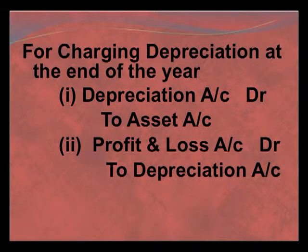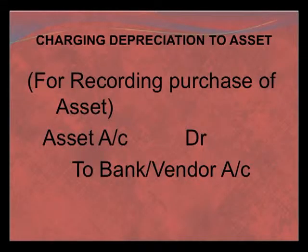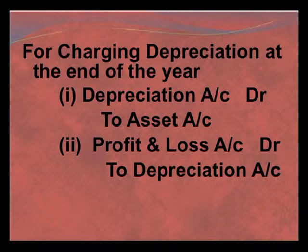To charge depreciation at the end of the year under this method, we first debit the depreciation account and credit the asset account. For transferring the depreciation to profit and loss at year end, we pass the entry: profit and loss account debit to depreciation account. So under the first method, the entries are: (1) asset account debit to bank/vendor, (2) depreciation account debit to asset account, and (3) profit and loss account debit to depreciation account.